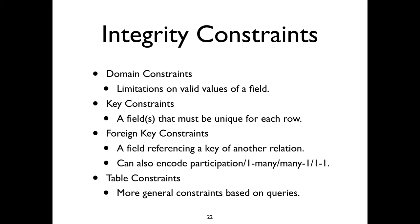In general, constraints fall into one of four categories. Domain constraints are constraints on individual attributes — what is a valid value for a given field? That might be as simple as 'this must be an integer,' but it can get more complex. Key constraints enforce uniqueness — a key in a database is any attribute or set of attributes that together uniquely identify a row of a given relation.